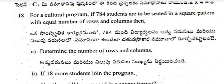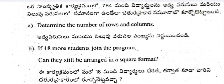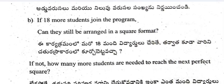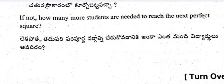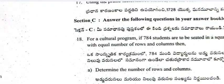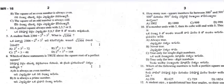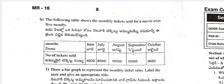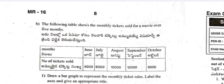Section C Question 18: For a cultural program, 784 students are to be seated in a square pattern with equal number of rows and columns. Determine the number of rows and columns. If 18 more students join the program, can they still be arranged in a square format? If not, how many more students are needed to reach the next perfect square?